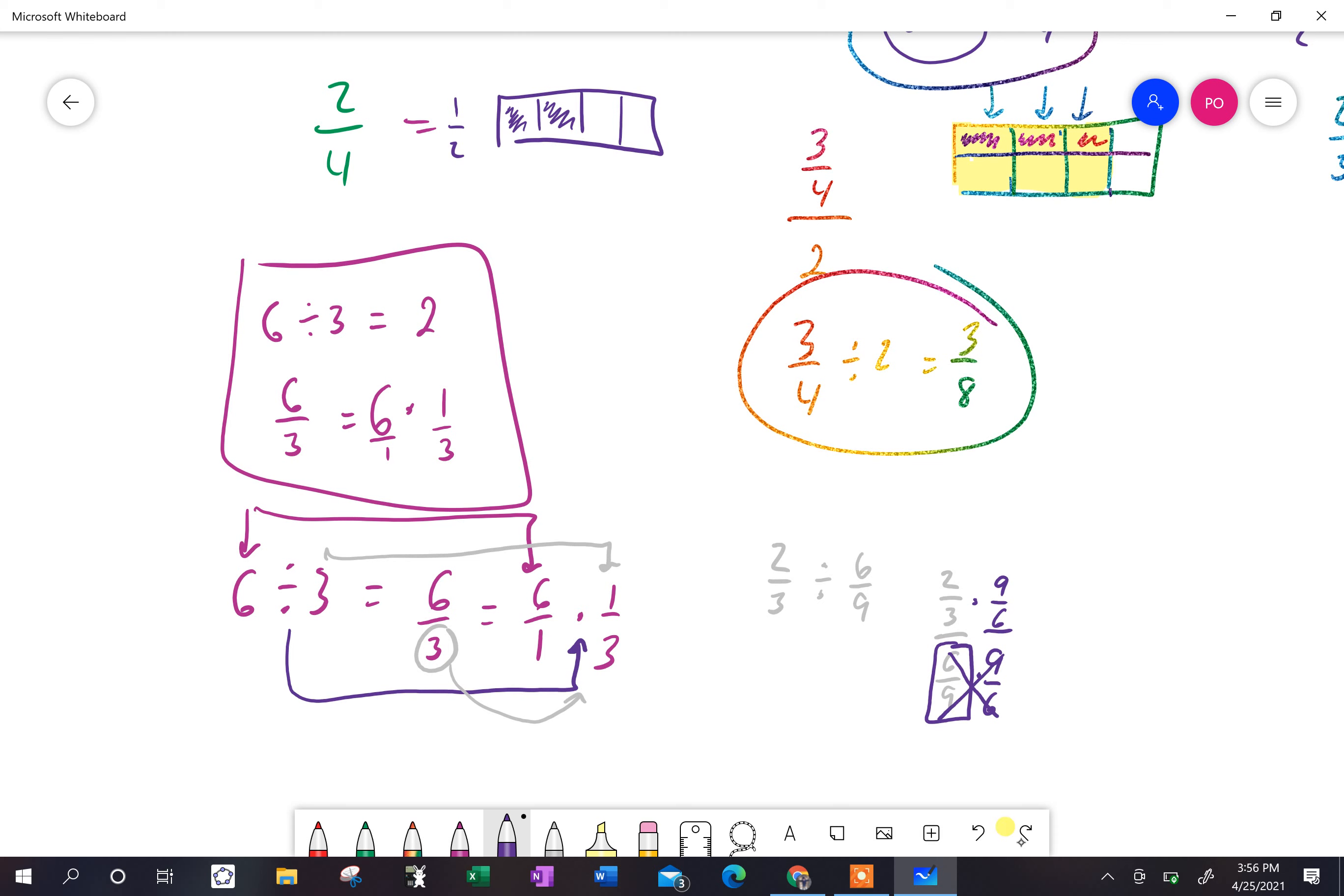And I'm left with two over three divided by six over nine is equal to two over three times nine over six.